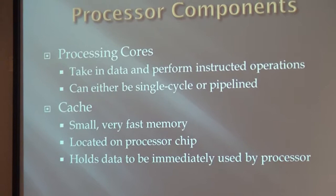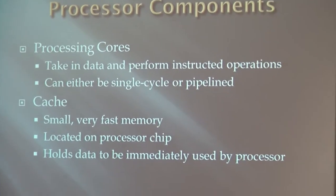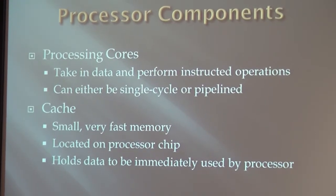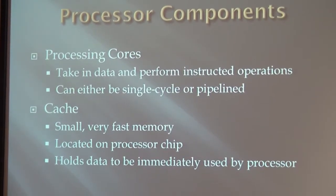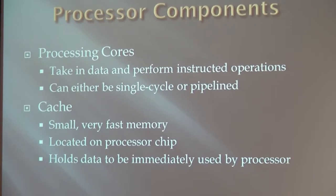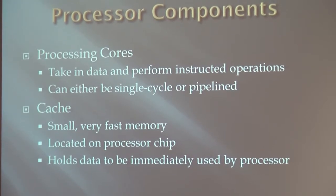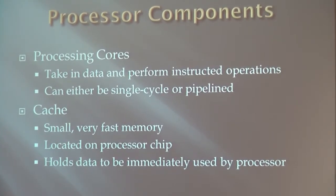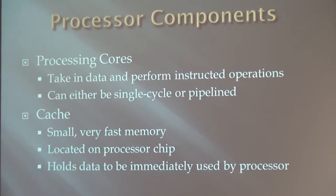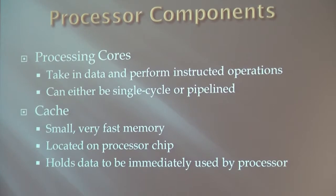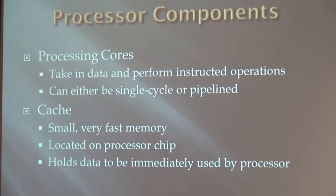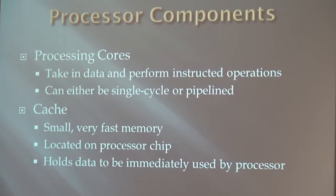The components of our processor are the actual processing cores. These can be arithmetic logic units, Boolean logic units, graphics logic units — lots of different types of logic units. We're just going to call them processing cores. They take in data and perform the operations given by the instructions. They can either go through a single cycle, where each operation is completed in its entirety as it's read in, or as a pipeline machine where it does parts of each instruction and can do multiple instructions at a time, which increases performance by increasing throughput significantly.